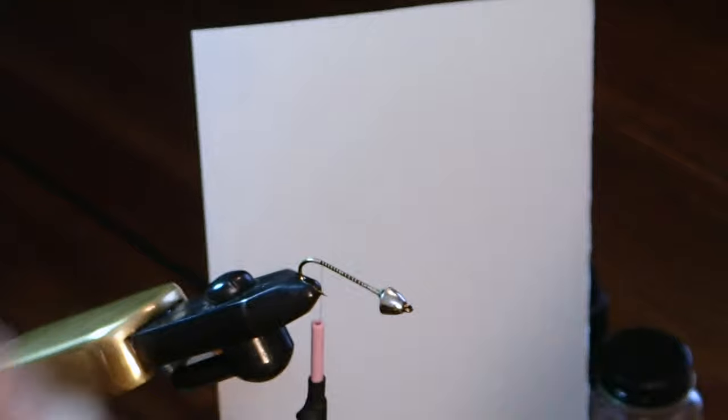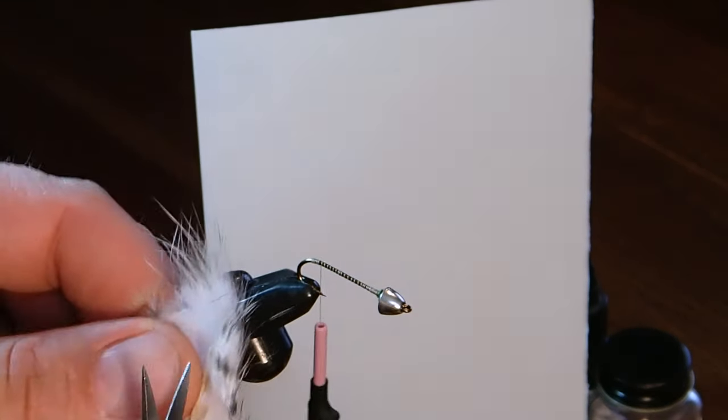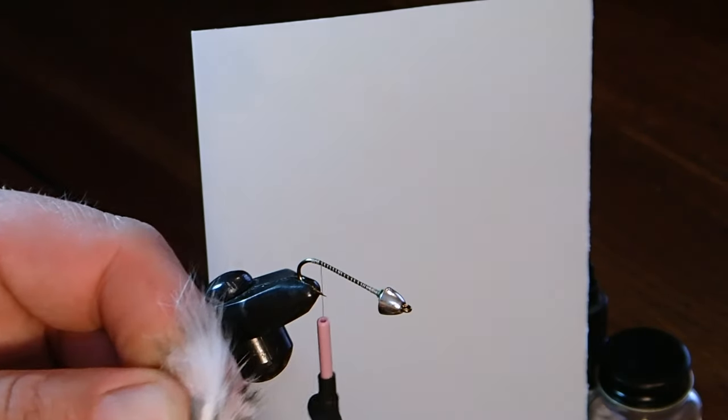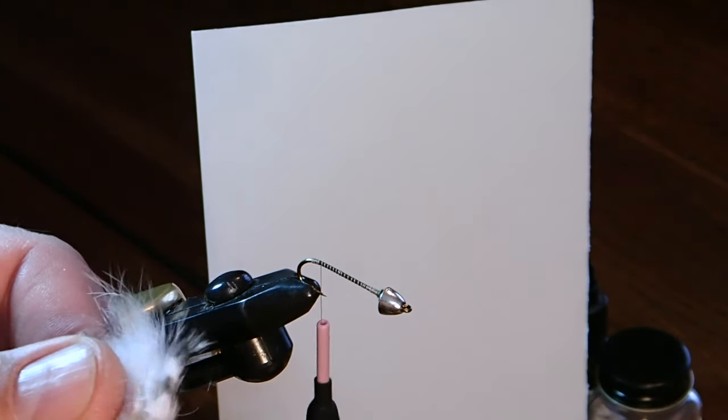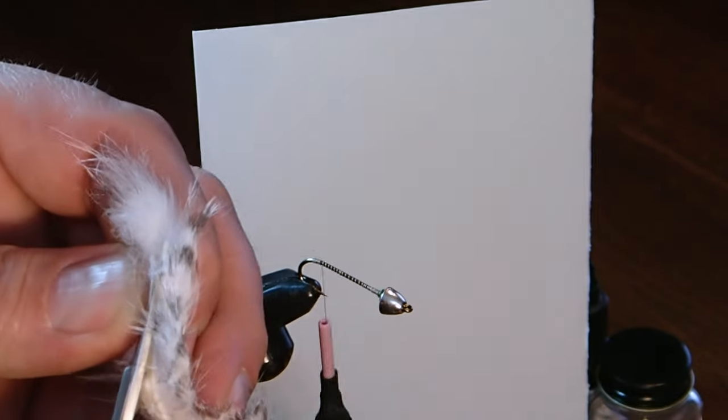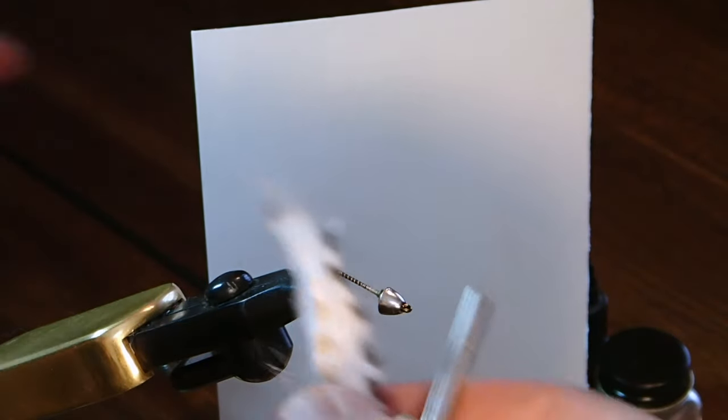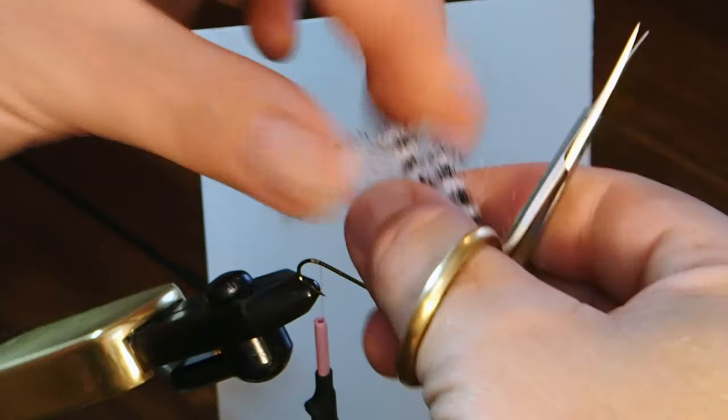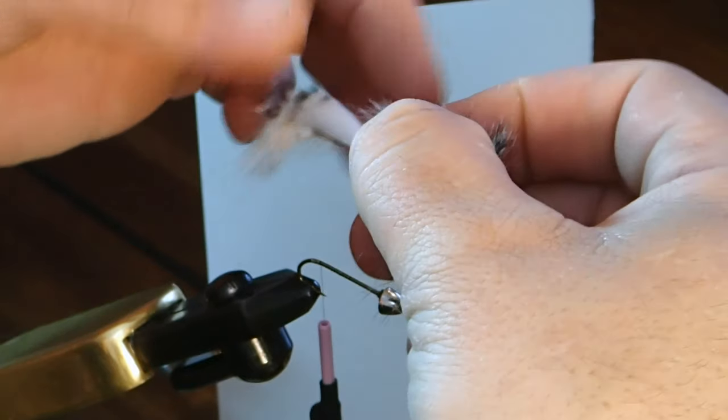All right, we're going to use some rabbit. These are zonked rabbit strips cut into real thin strips. I'm going to cut this end off, make a little point. You notice this is kind of a barred, it's a dyed rabbit strip. It's just a white, but then it's got these stripes dyed into it. I'm going to cut this, make sure it goes to a nice point.